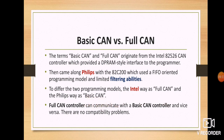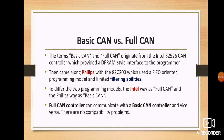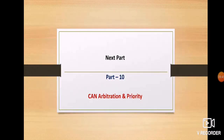A full CAN controller can communicate with a basic CAN controller and vice versa — there is no compatibility problem, similar to how standard CAN and extended CAN are compatible. The main difference between basic CAN and full CAN is the filtering ability. The upcoming tutorial will cover CAN arbitration and priority — how the arbitration field works and how it prioritizes messages.